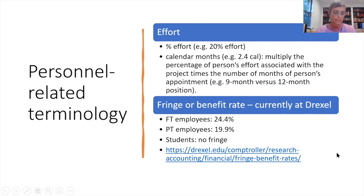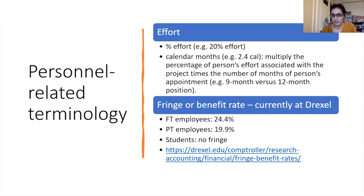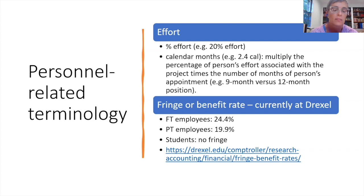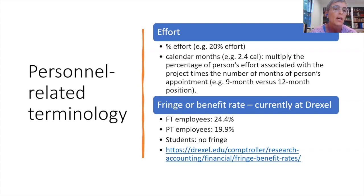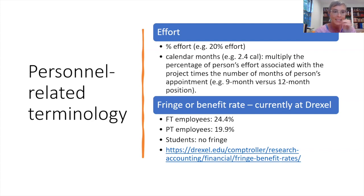A participant asks: is fringe 24% of the entire budget or of the allocated salary? It's 24.4% of that person's percentage effort on your grant. For example, if a person has a salary of $100,000 and is on the grant for 20%, that's $20,000, and you pay 24.4% of that $20,000 in fringe. So it depends on that person's salary and their percentage effort — you can see how the computation becomes complex.